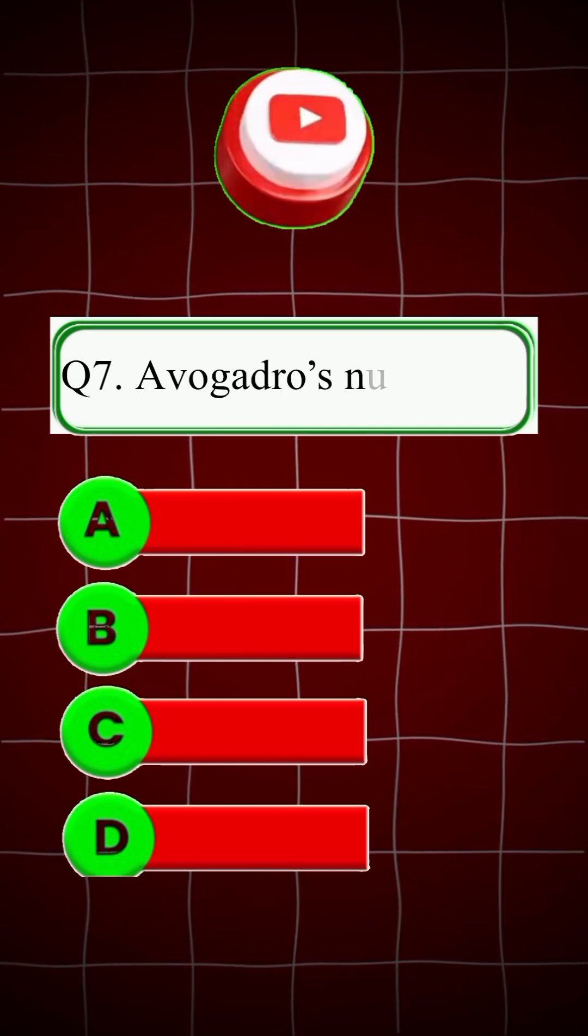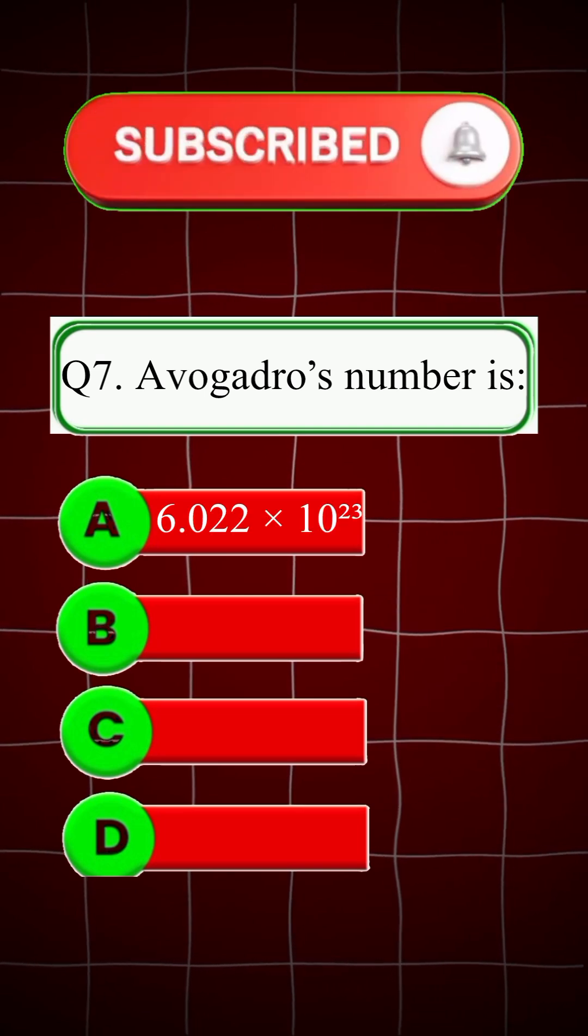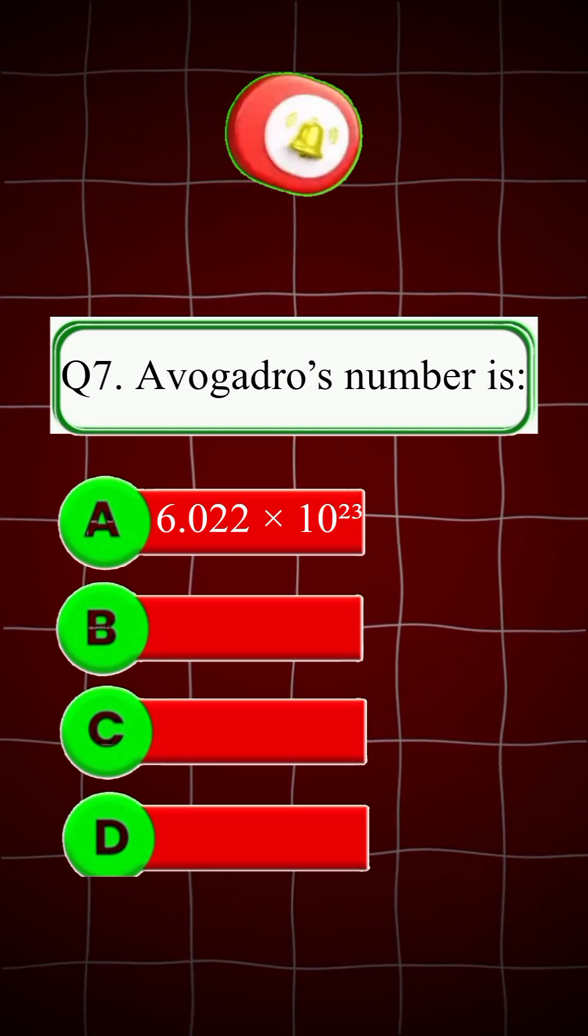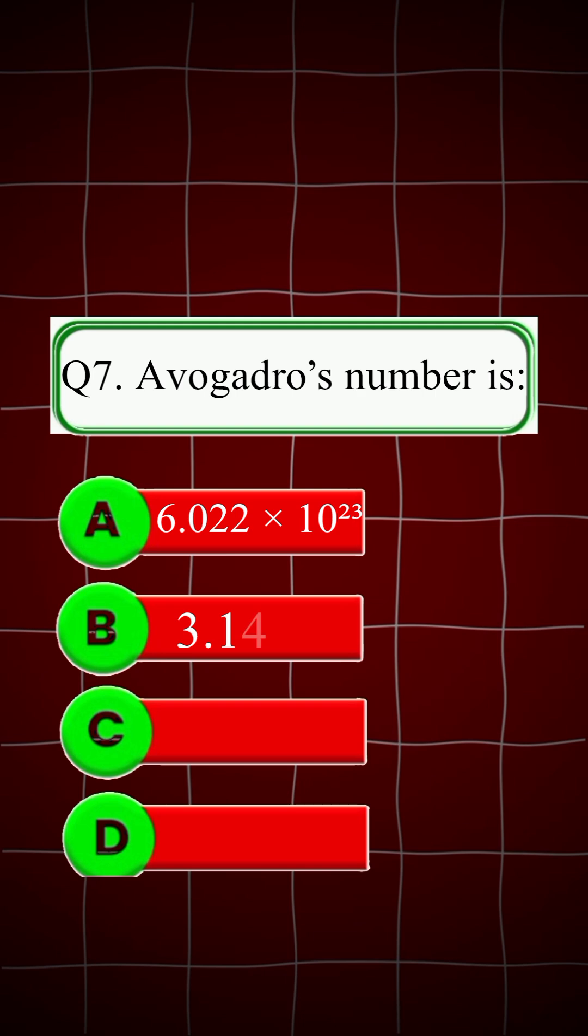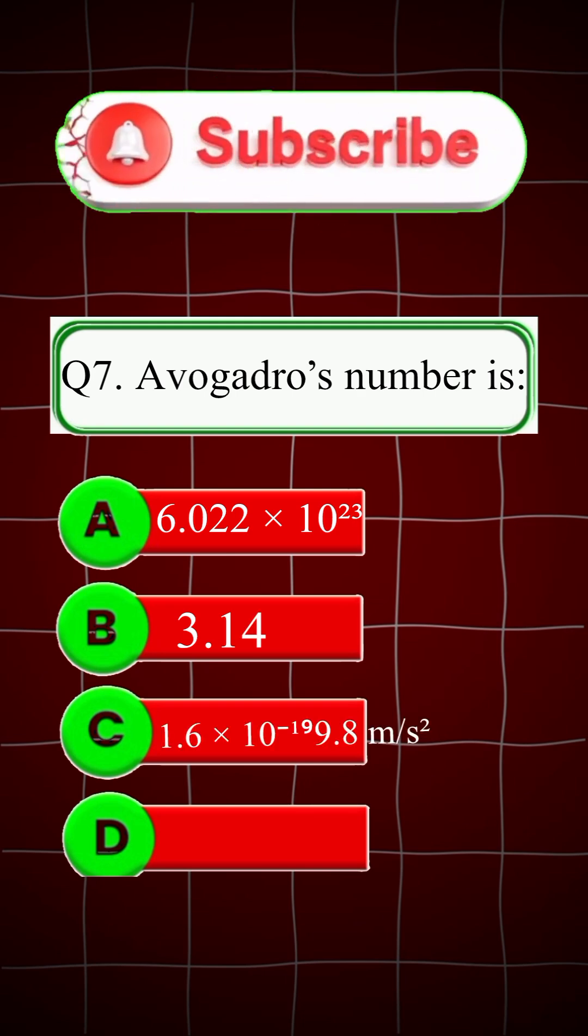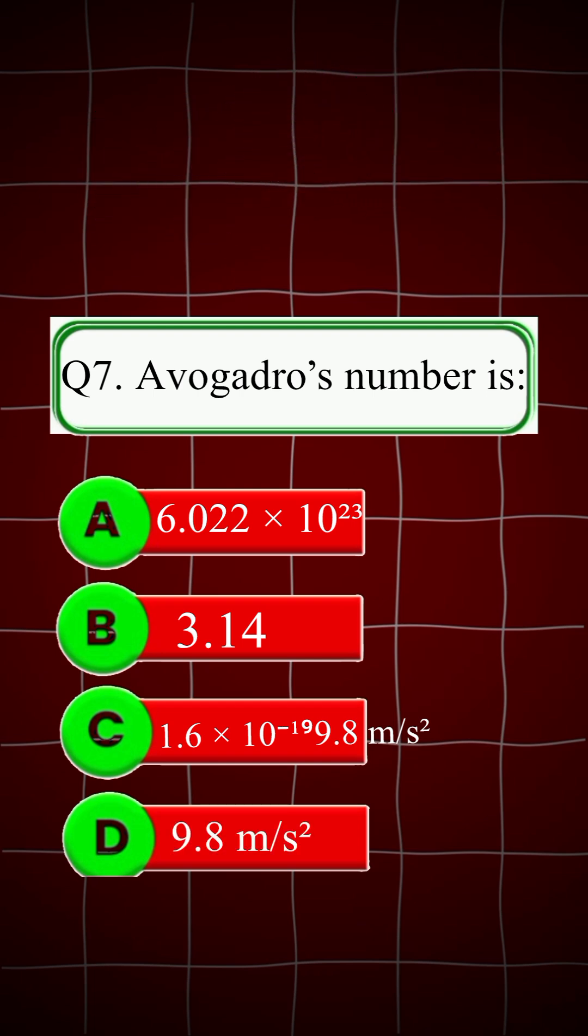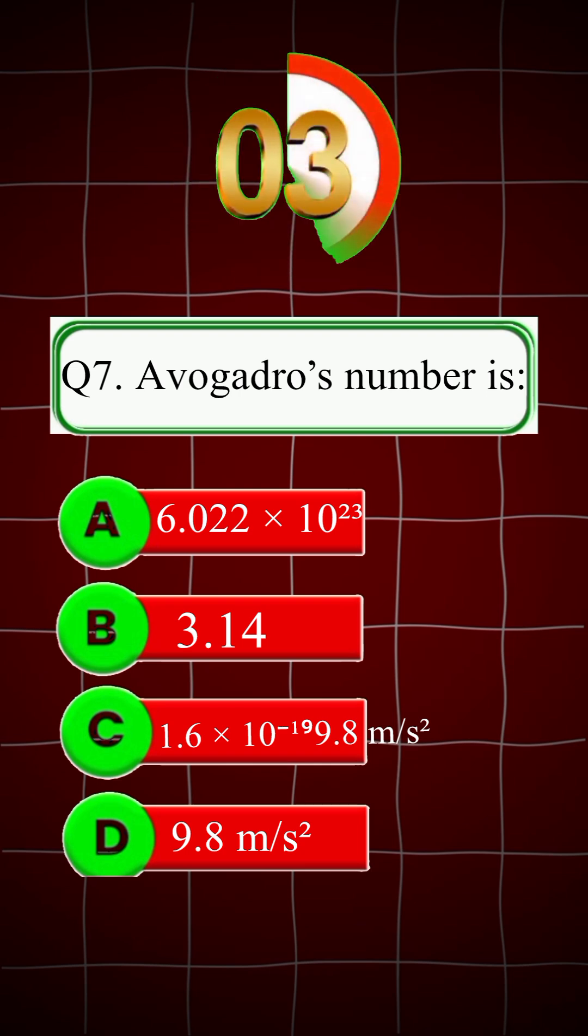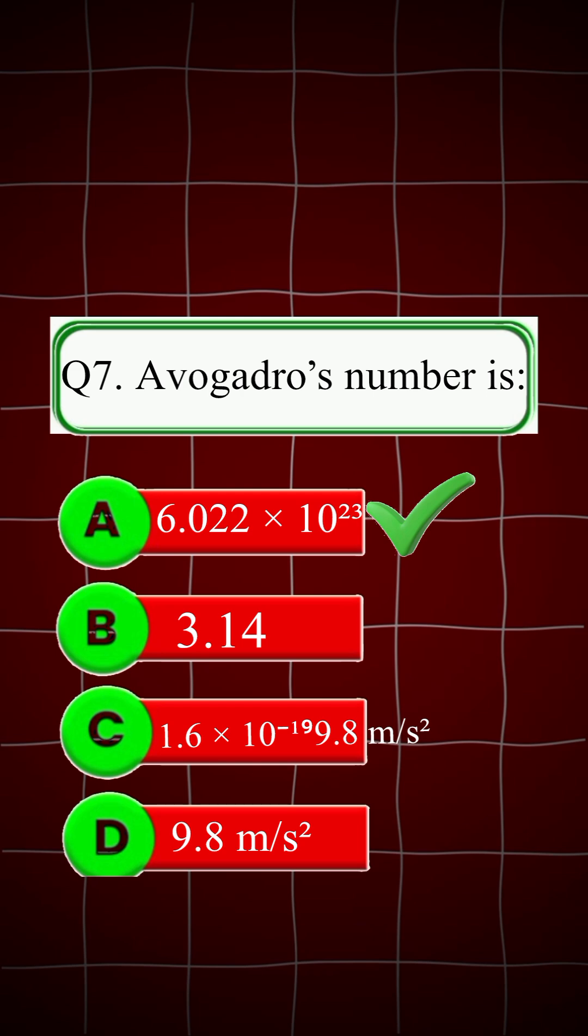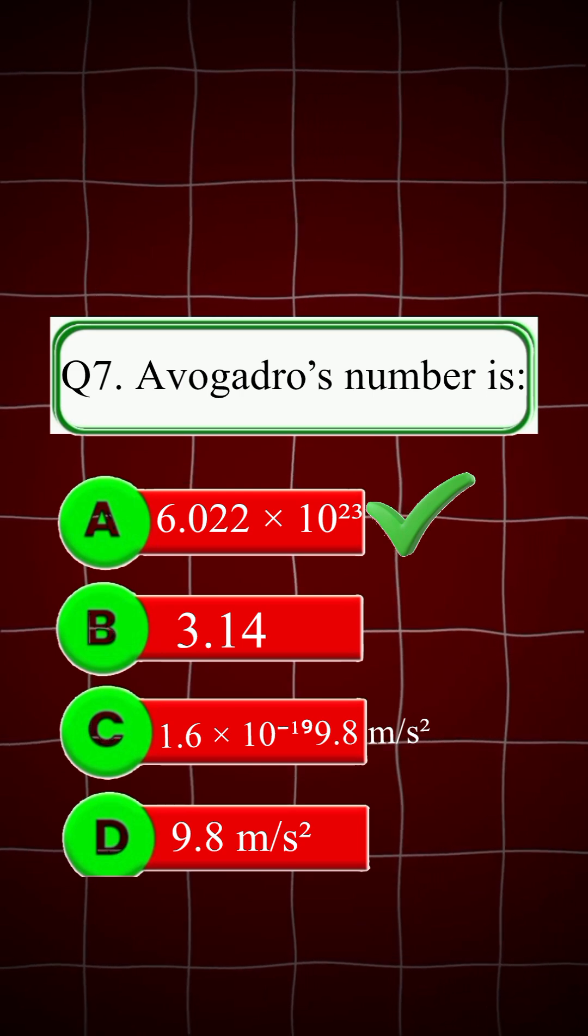Question 7: Avogadro's number is: A. 6.022 times 10 to the 23rd power, B. 3.14, C. 1.6 times 10 to the negative 19th power, D. 9.8 meters per second squared. Right answer is A, 6.022 times 10 to the 23rd power.